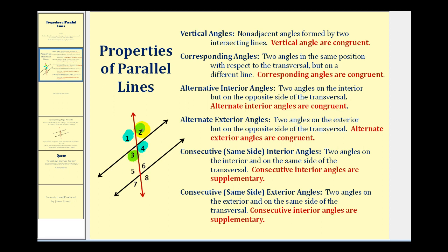So are two and three, five and eight, and six and seven. These are vertical angles, and they are also congruent angles. Corresponding angles are two angles in the same position with respect to the transversal, but on a different line, and these angles are also congruent.